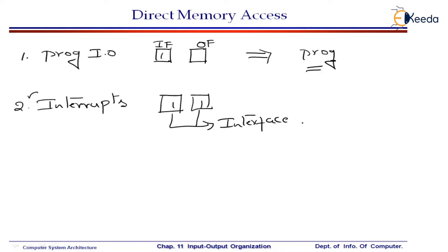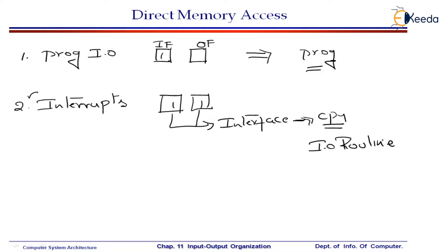The interface is going to interrupt the CPU when one of the flags are set. Then, the moment CPU is interrupted, the CPU is going to execute something called an I/O routine in order to make a transfer. This I/O routine can also be called a service routine — an interrupt service routine.